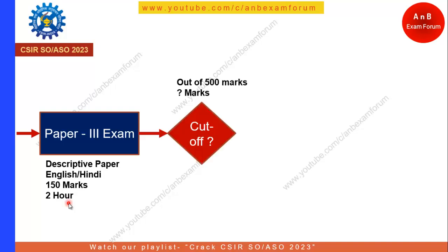Similar to Paper 1 and Paper 2, there will be a cutoff — but this time it is out of 500. How does 500 come? It is the total of Paper 1 (150), Paper 2 (200), and Paper 3 (150), making 500 marks. The cutoff will be decided by CSIR; it has not been clearly mentioned in the advertisement — it is their discretion. If you are able to come under the cutoff, you proceed to the merit list; otherwise, your journey stops here.